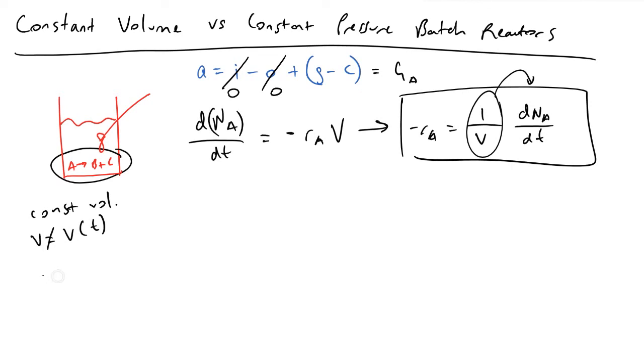And so what I mean by that is we would have minus rA is equal to d, and then we're pulling in the one over V term, so d(NA/V)/dt.